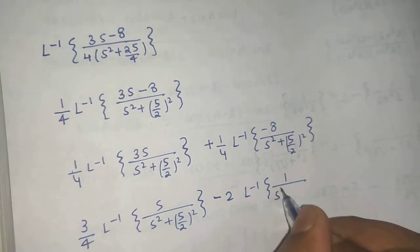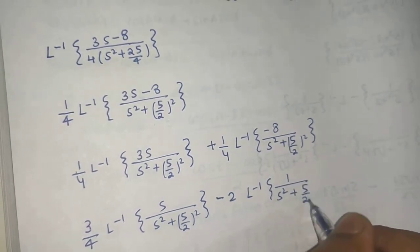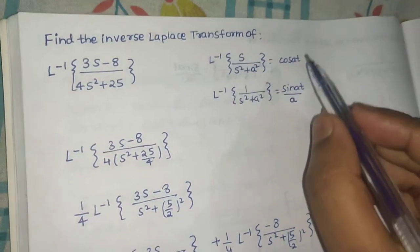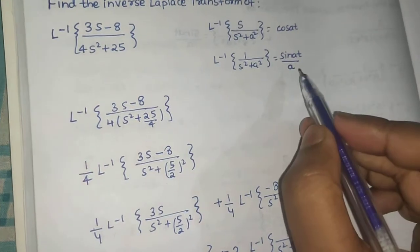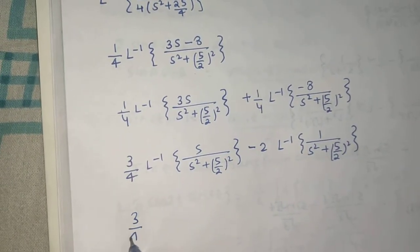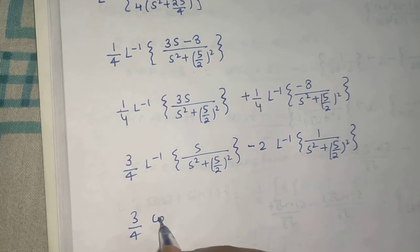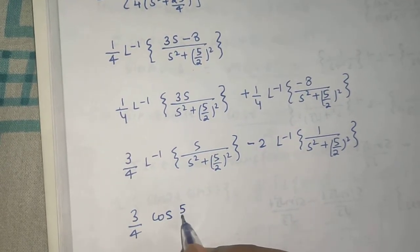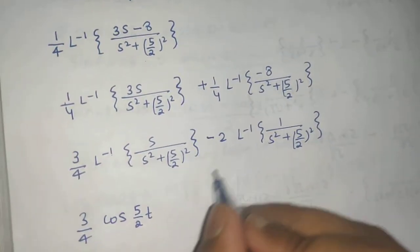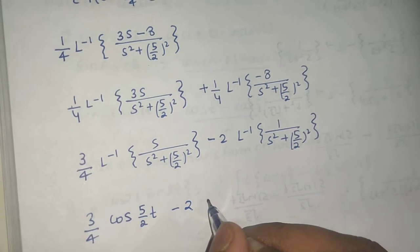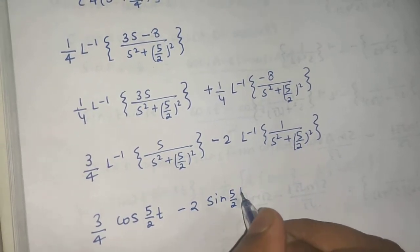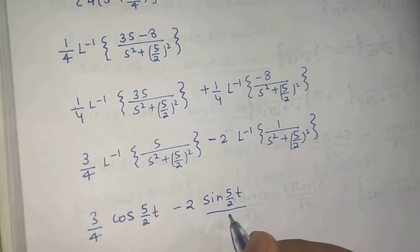Now this matches with cos A t and this one matches with sin A t by A. So I can write 3 by 4 cos A t, that means 5 by 2 t. And minus 2 times this will be sin 5 by 2 t but that will be divided by A.